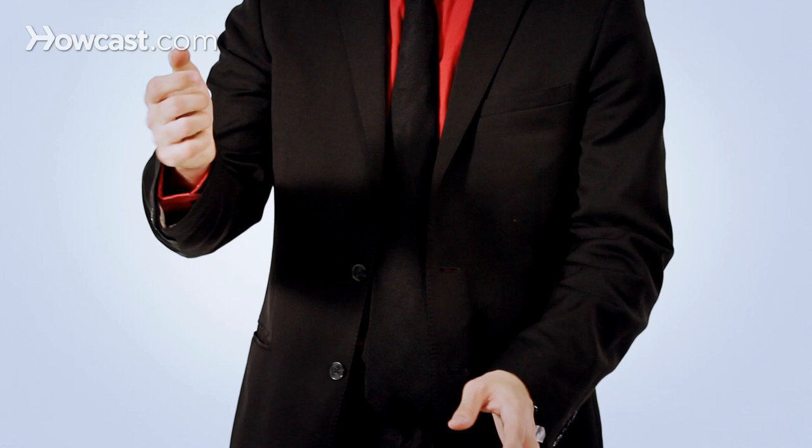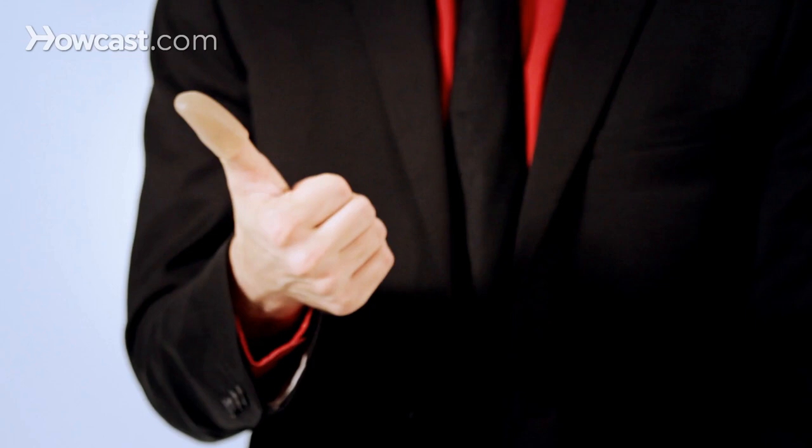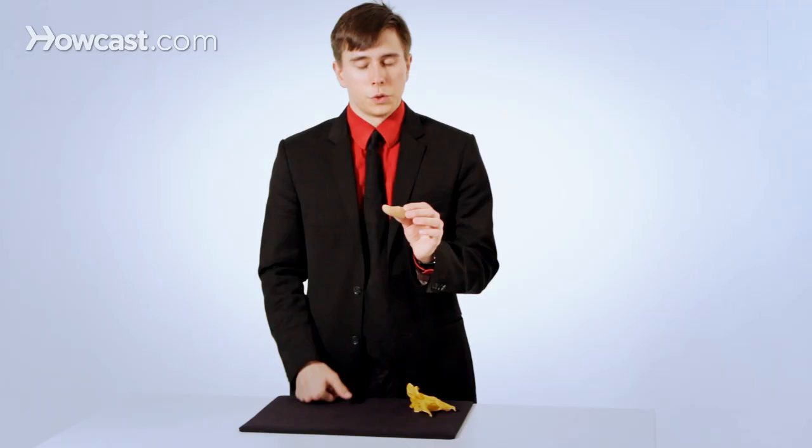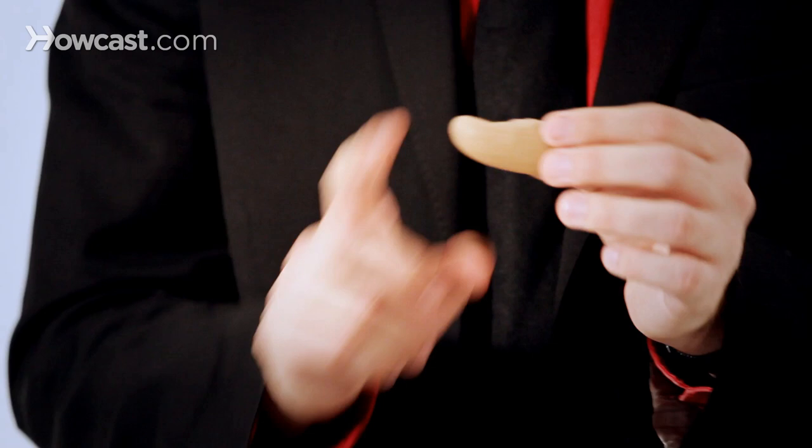The way this works is that you have a thumb tip. You can get this at any magic shop. This is a fake thumb. This one fits very well. They make them in kid sizes and for adults, and several other sizes, so you'll be able to find one that will fit you.